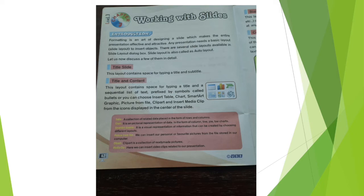The title and content layout contains space for typing a title and a sequential list of text prefaced by symbols called bullets. You can choose to insert a table, chart, smart art graphic, picture from file, clip art, or insert media clip. These are the icons displayed in the center of the slide.